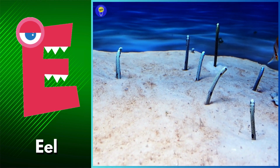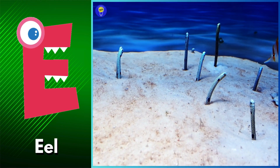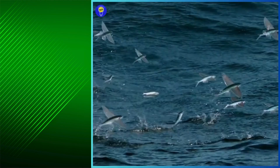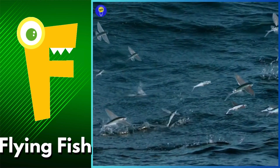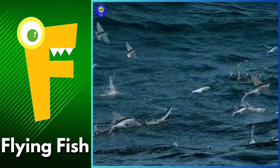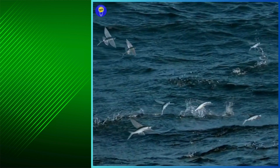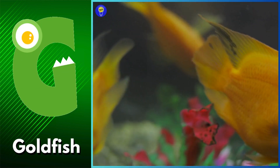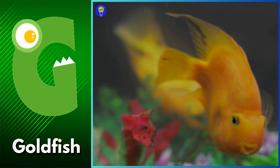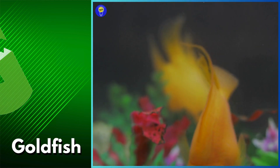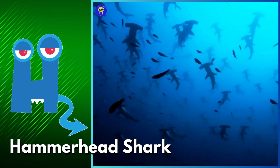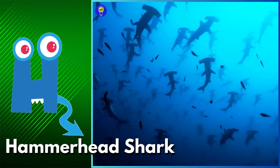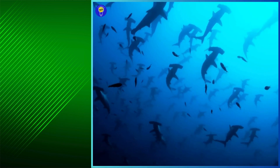E is for eel. Eel. F is for flying fish. Flying fish. G is for goldfish. Goldfish. H is for hammerhead shark. Hammerhead shark.